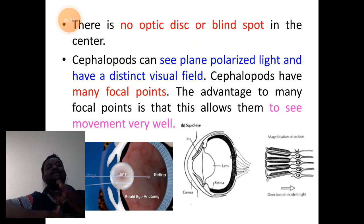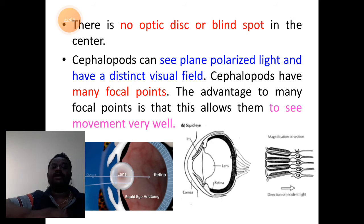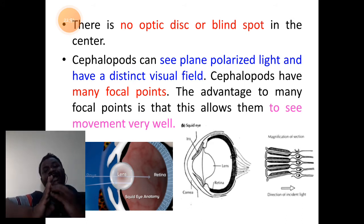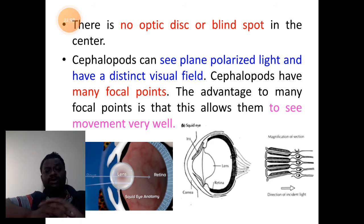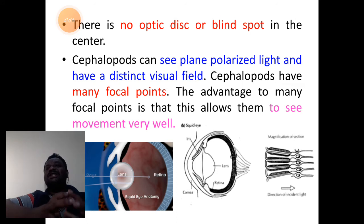There is no optic disc or blind spot where the optic nerve joins the eye. Generally, that spot in the case of vertebrates possesses no cones, no rods, no photosensitive cells at all — called the blind spot. That spot is totally absent in the case of the eye of cephalopod.